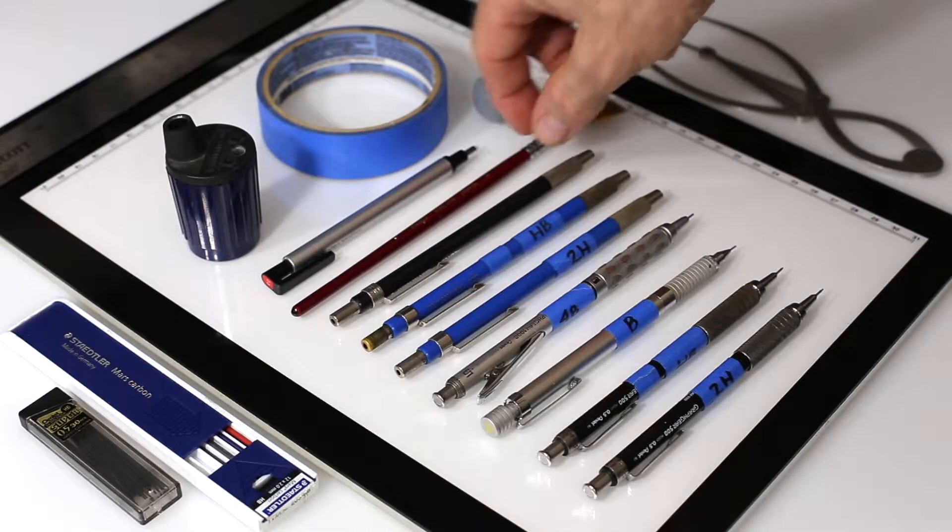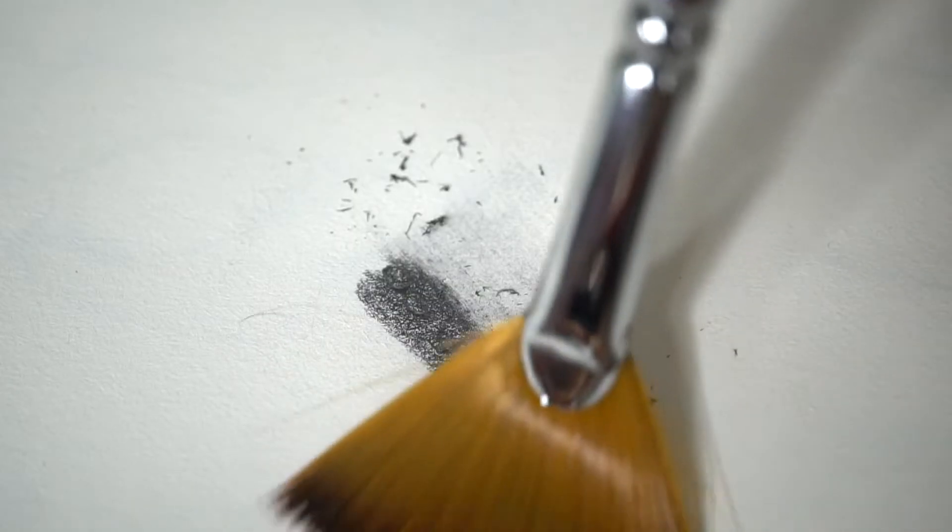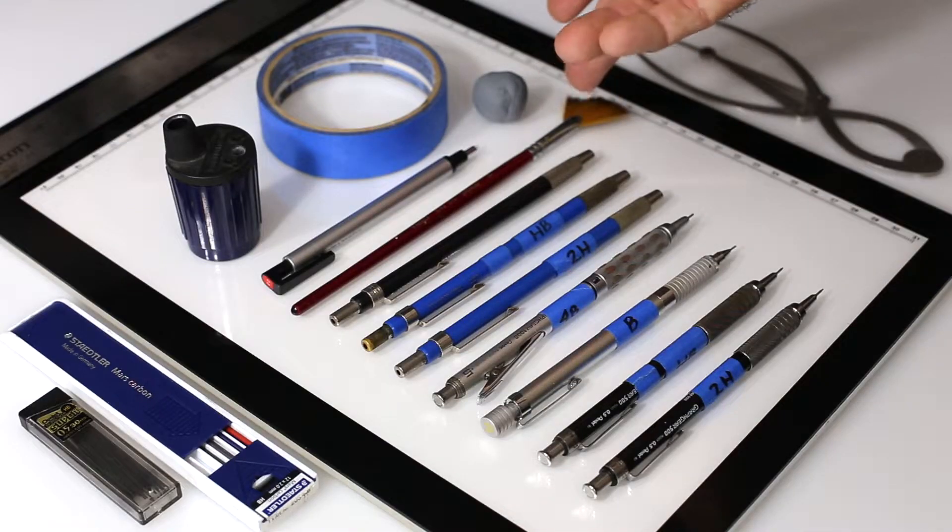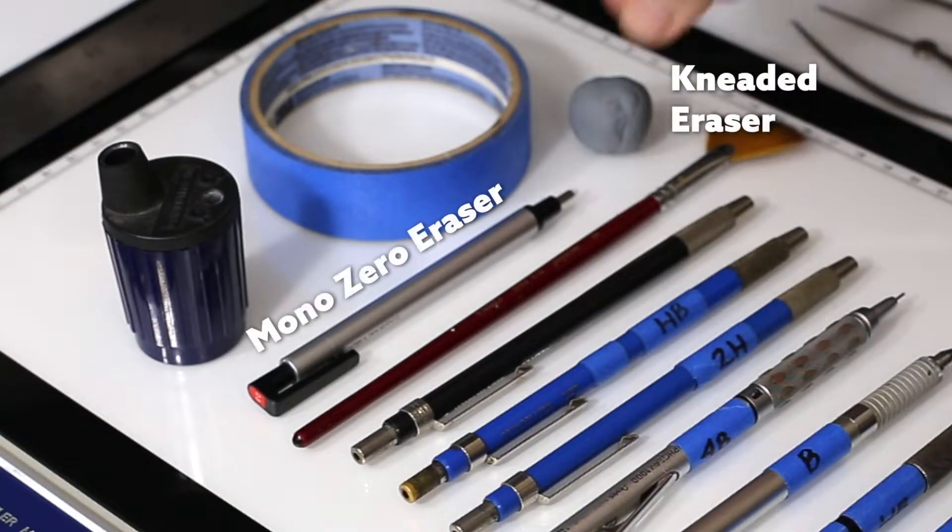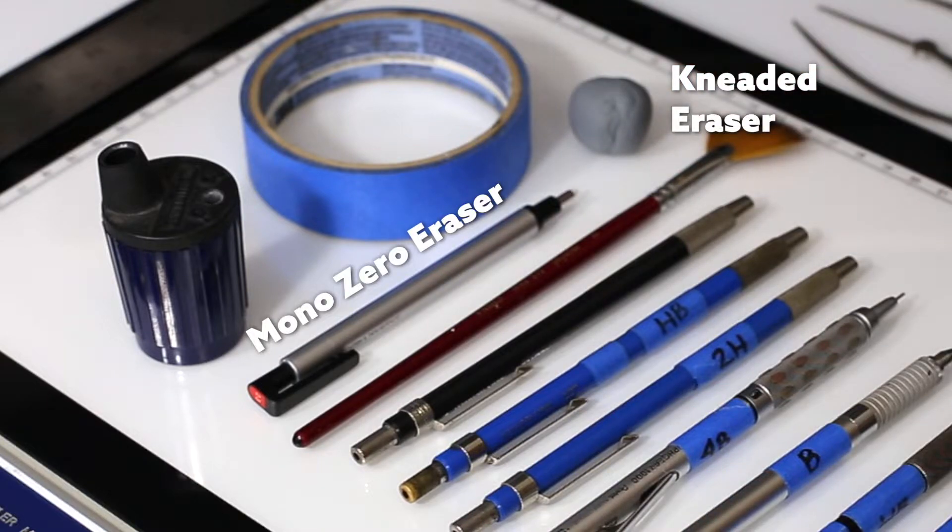This right here is basically a broom. You can sweep off eraser dust if you like, instead of using your hand and getting oils on your paper. This is a mono zero, and the kneaded eraser always comes in handy.